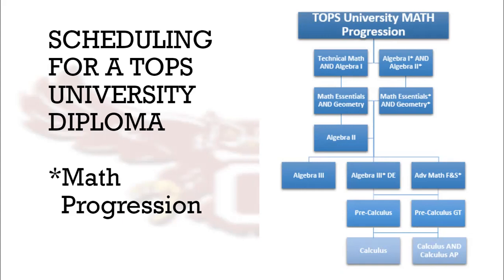After Algebra 2, students usually take Algebra 3 or Advanced Math Functions and Statistics. For students who would like to get to Calculus and Calculus AP their senior year, they must take Pre-Calculus their junior year. Students will choose between Algebra 3, Algebra 3 Dual Enrollment, or Advanced Math Functions and Statistics as their 4th math. After that, those students will take Pre-Calculus, then Calculus, and then Calculus AP.